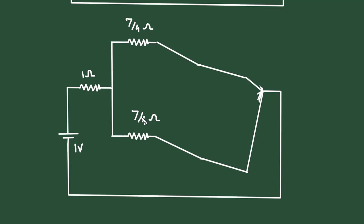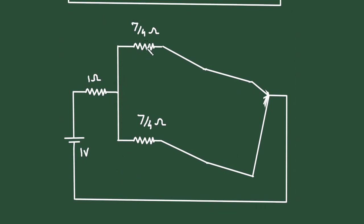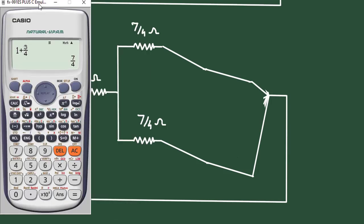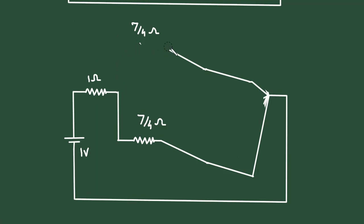Now we can see this 7/4 ohm and this 7/4 ohm are connected in parallel. Since their values are the same, the equivalent resistance is 7/4 divided by 2, which equals 7/8 ohm, or 0.875 ohm. We can erase these and write a single resistor of 0.875 ohm.